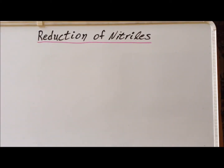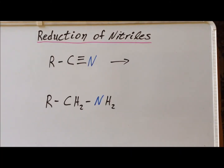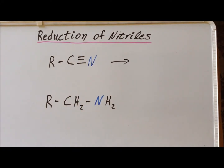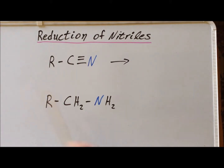In this video, we are going to discuss the reduction of nitriles to amines, both for saturated nitriles and then for unsaturated nitriles. Recall that a saturated nitrile has the general structure RCN, where we have the cyano group and R is going to be an alkyl group — a saturated, paraffinic group. The nitrile will undergo reduction, and our product is going to be a primary amine, where R is again an alkyl group.